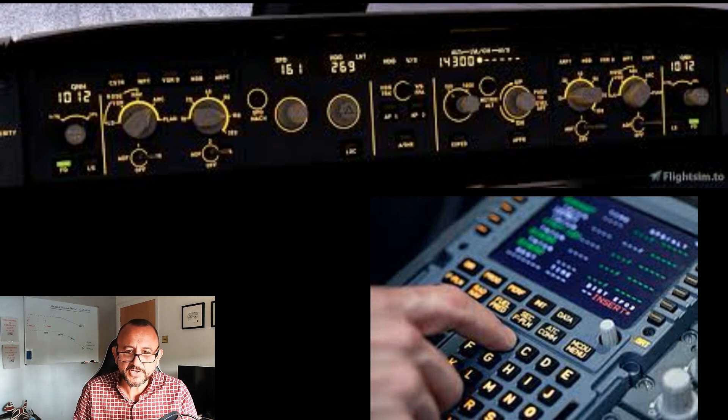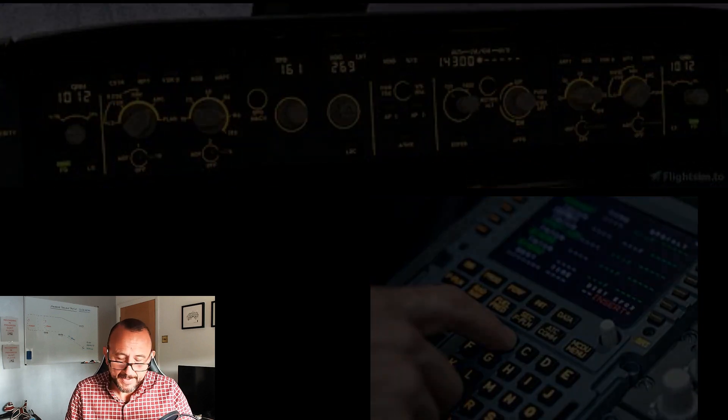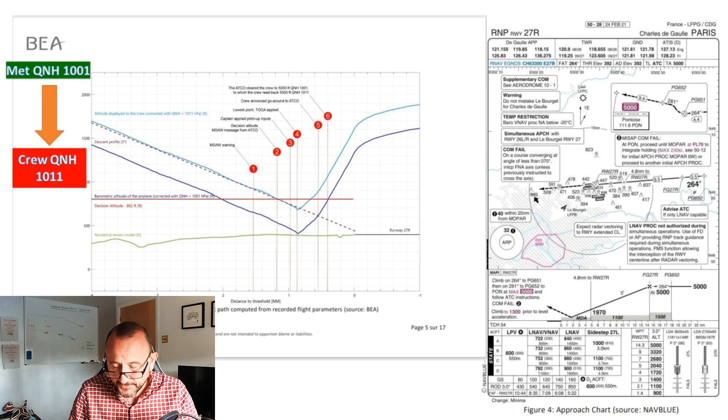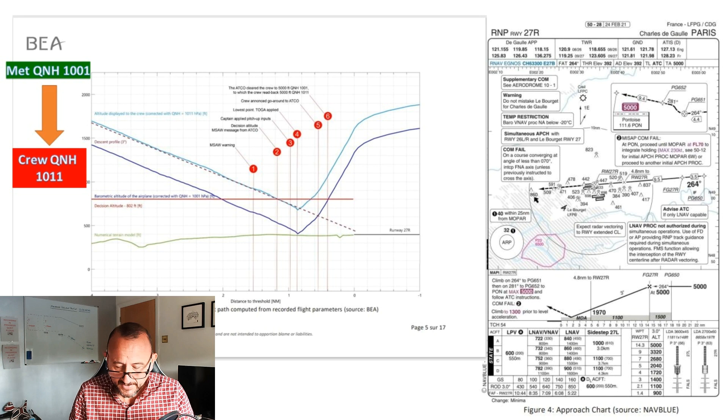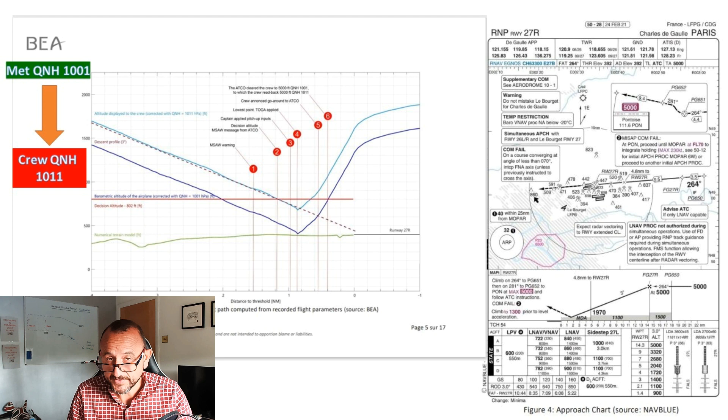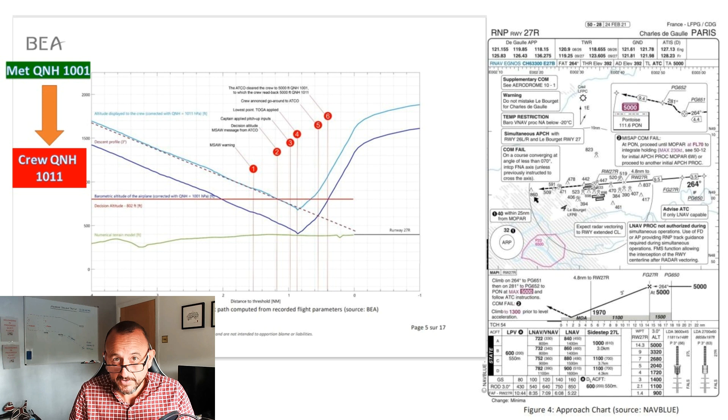Just looking at a couple of the slides here, ultimately what happened is the aircraft was flown with the incorrect baro setting. The approach was flown. The difference between the correct and the incorrect QNH - between 1001 and 1011 - is obviously 10 millibar, and in ISA that's approximately 300 feet.